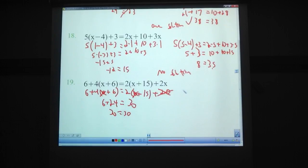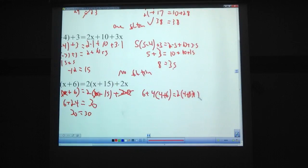Let's find out. Let's put another 4, why not? 6 plus 4 times 4 plus 6 equals 2 times 4 plus 15, plus 2 times 4. So, 4 plus 6, that's 10. 4 times 10, plus 6, that's 40 plus 6, 46. Other side, 4 plus 15, that is 19 times 2 is 38. 2 times 4 is 8. 38 plus 8, 46. Hey, how about that?